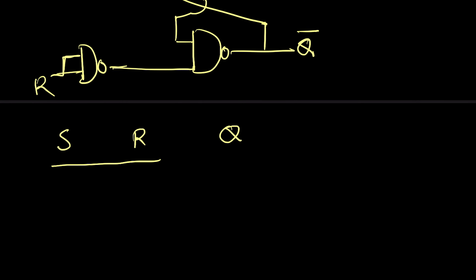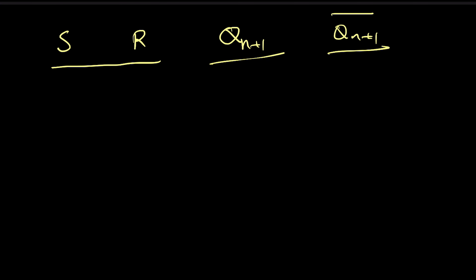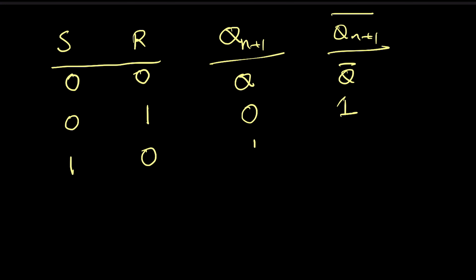What will be the truth table? Q(n+1) and Q(n+1) bar. If S=0 and R=0, then this will be memory. If S=0 and R=1, then Q=0 and Q bar=1. If S=1 and R=0, Q=1 and Q bar=0. And if S=1 and R=1, it will be an invalid state where Q and Q bar are both equal to 1.